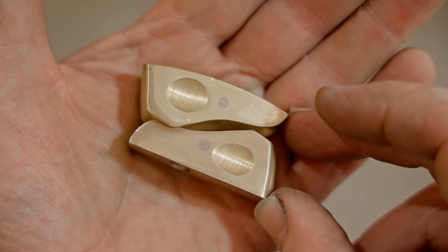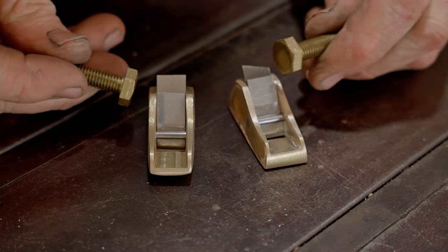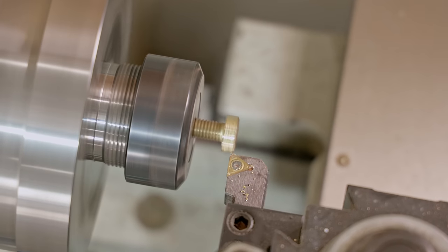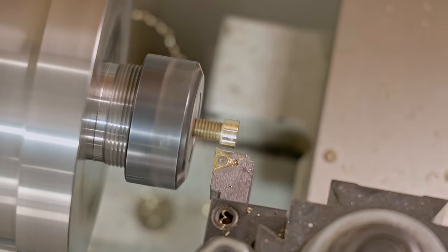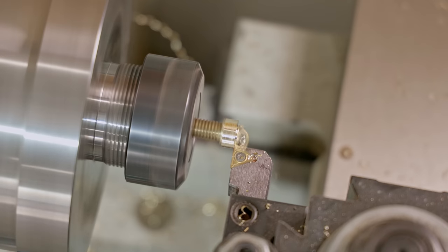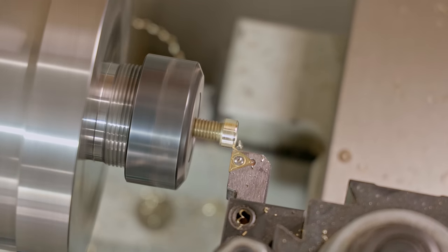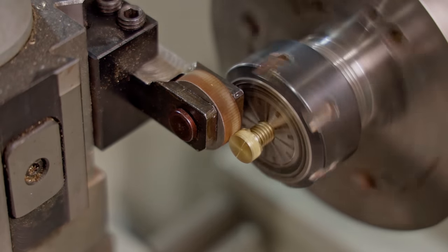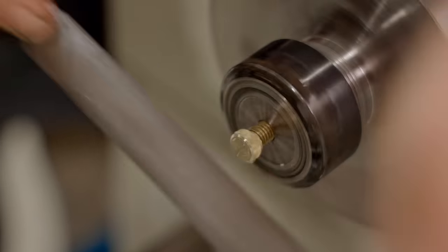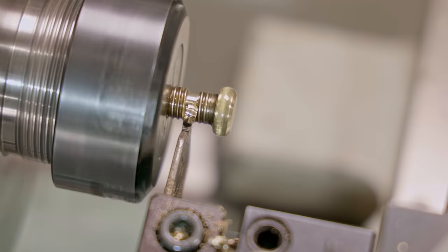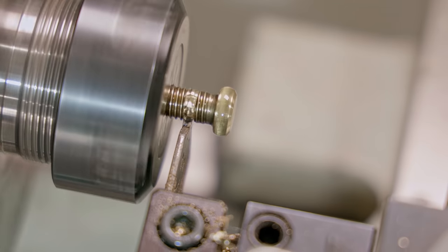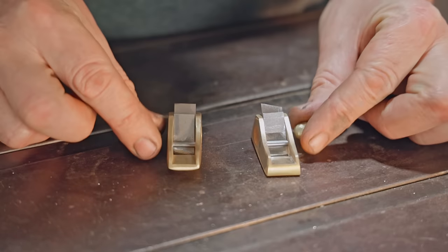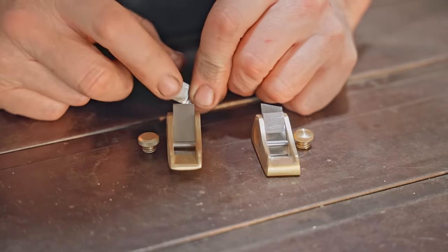The lever caps need screws to push the blade down onto the bed, and I'll make those from these M8 brass bolts. If you don't have a lathe then you'll need to get creative here, maybe do something on your drill press, or just use a stainless steel machine screw which would look fine. I'll just drill and thread a hole in the lever caps and that's all of the pieces made.